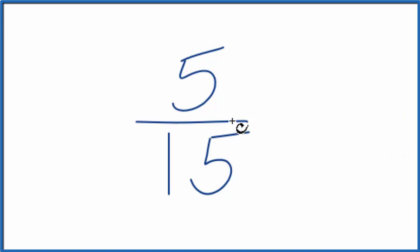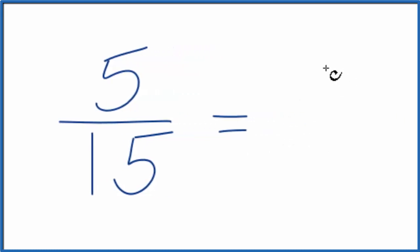So what we need to do is find a common factor. We know that 5 goes into 5 one time and 5 goes into 15 three times. So the common factor is 5. Divide 5 by 5, you get 1. Divide 15 by 5, you get 3. So if we simplify the fraction 5/15, 5 over 15, we get 1/3.